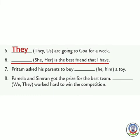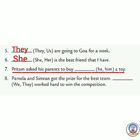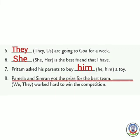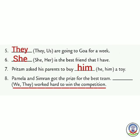Number 6: 'Dash is the best friend that I have.' She is used for a girl. Answer: 'She is the best friend that I have.' Number 7: 'Pritam asked his parents to buy dash a toy.' Pritam is a boy, so we use 'him'. Answer: 'Pritam asked his parents to buy him a toy.' If a boy's name appears, use 'him'; if a girl's name appears, use 'her'. Number 8: 'Pamela and Simran got the prize for the best team. Dash worked hard to win the competition.' Pamela and Simran are two people — more than one — so we use 'they'. Answer: 'They worked hard to win the competition.'